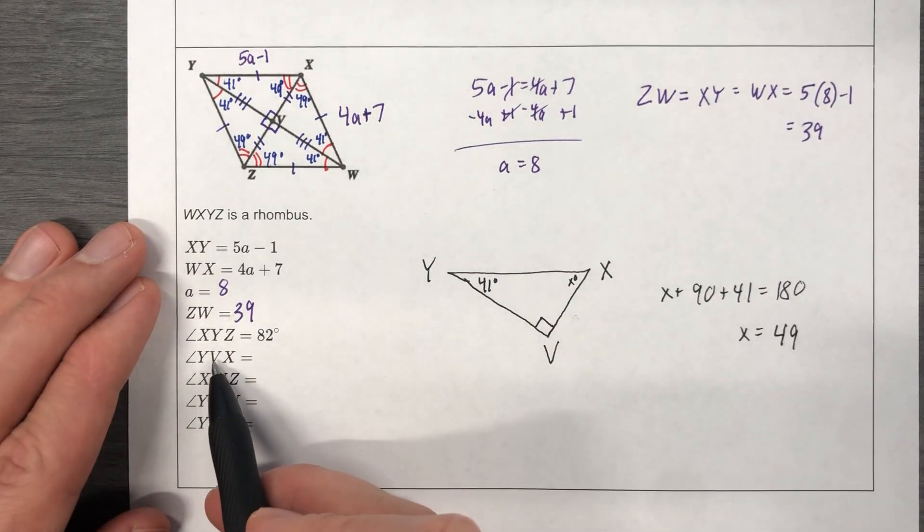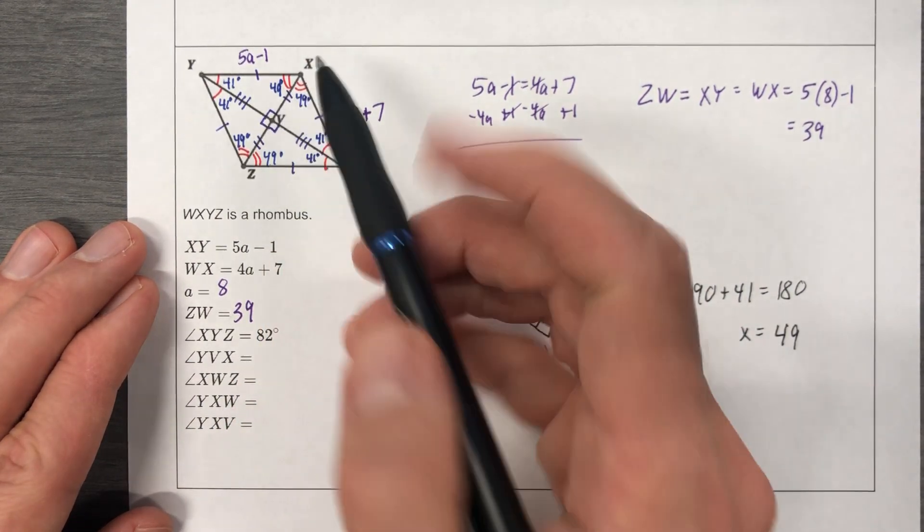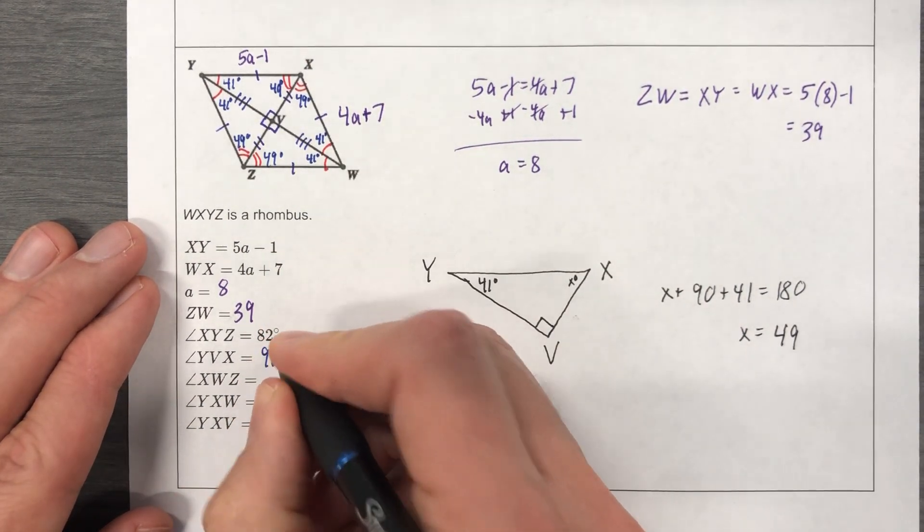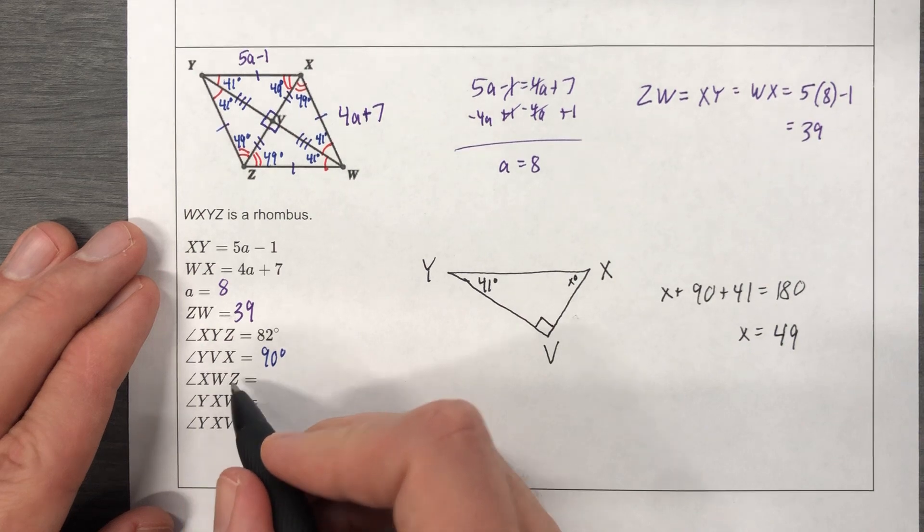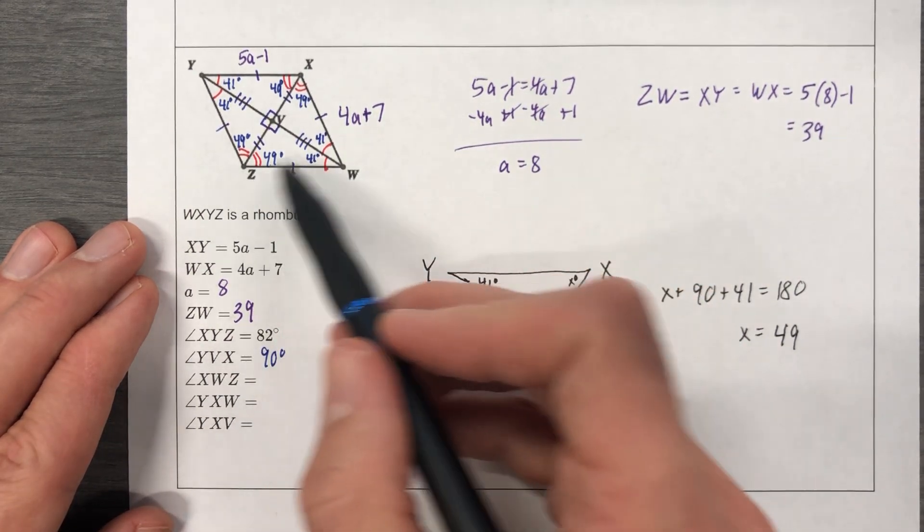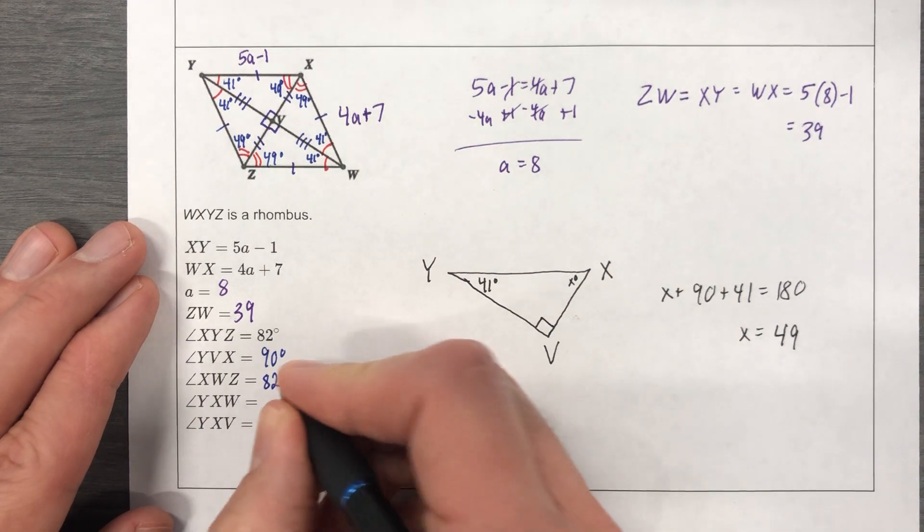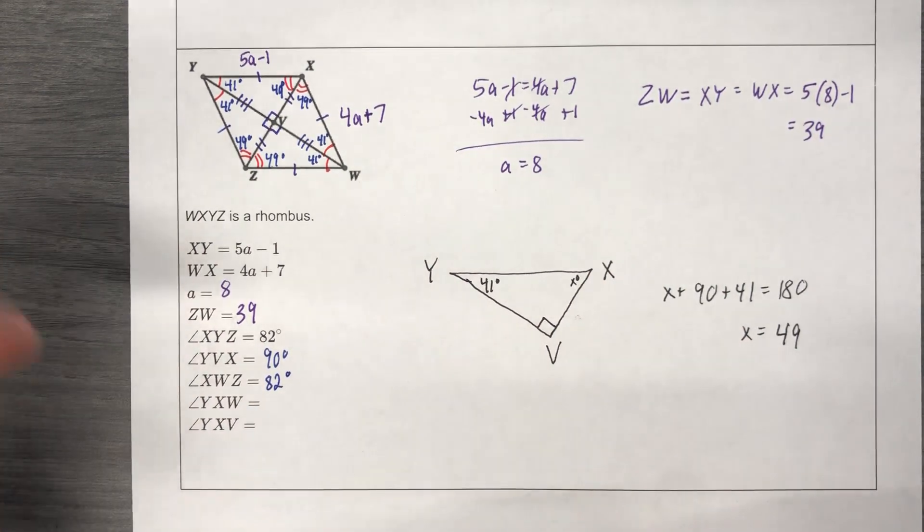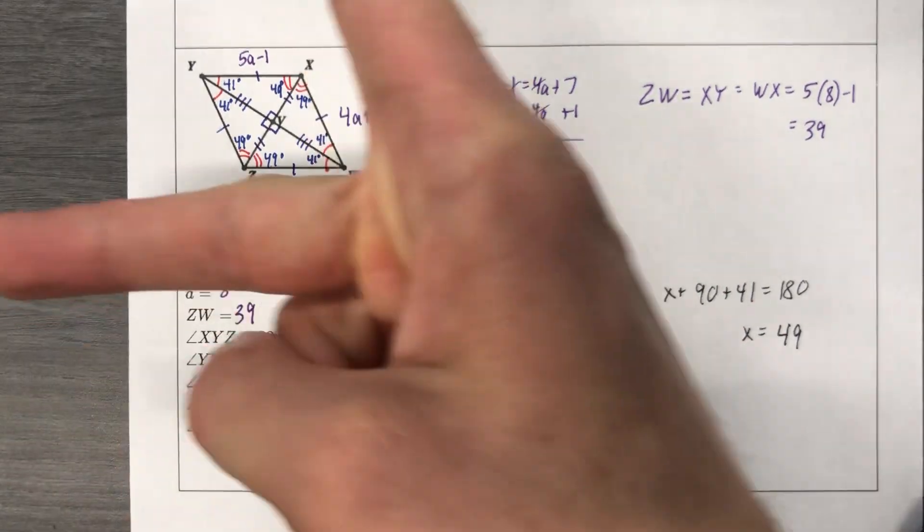Y, V, X. Y, V, X. 90. X, V, X, V. X, W, Z. It's 41 and 41. It must be 82 also, because if this is 82, this is 82.